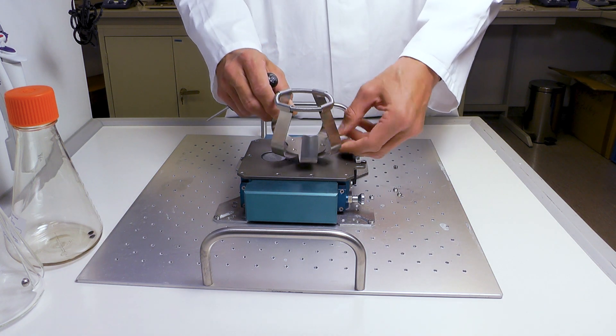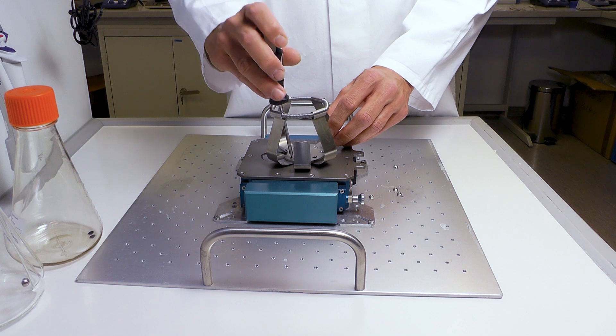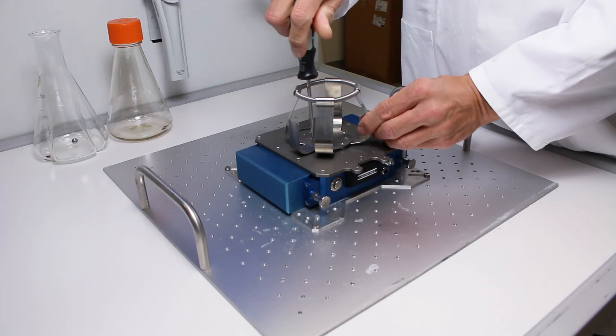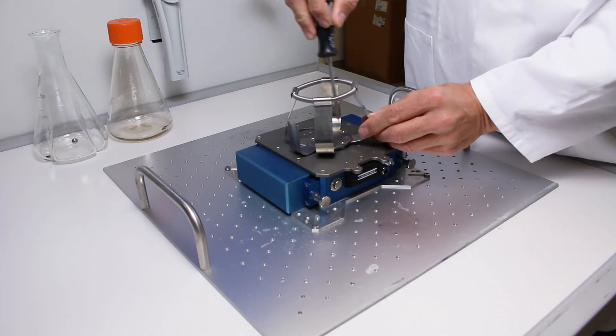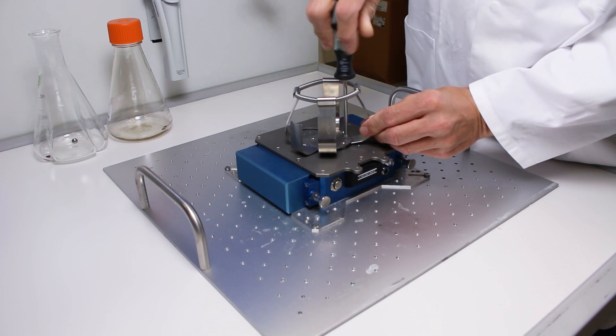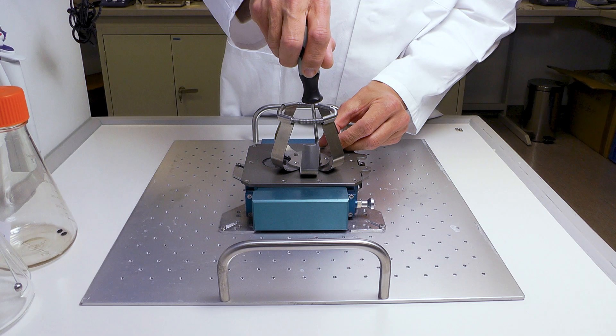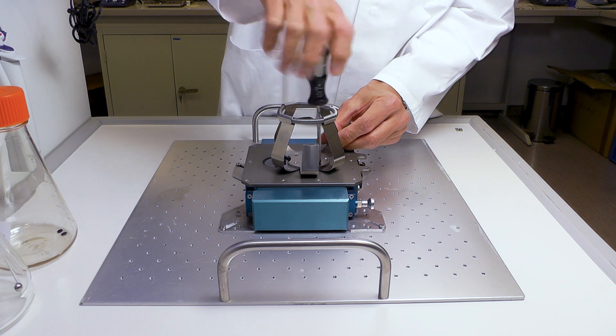Position the clamp in such a way that the recess in the base plate faces the reader optics. Press down on the clamp and attach all four screws loosely. Then tighten the screws crosswise.